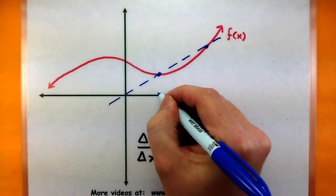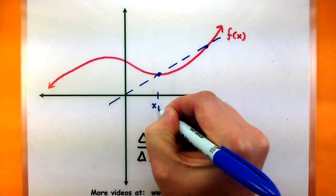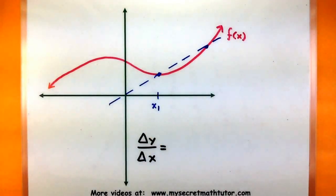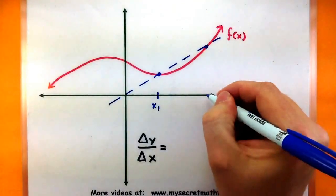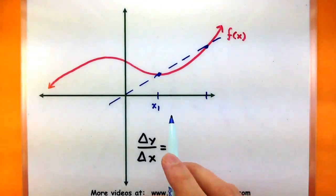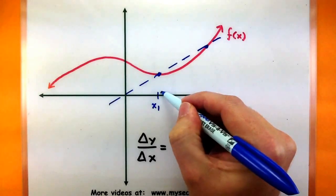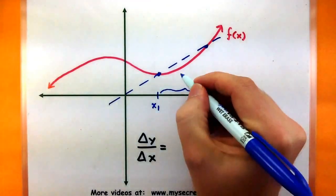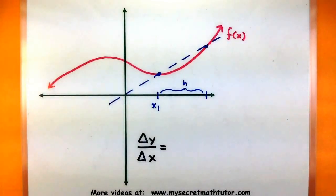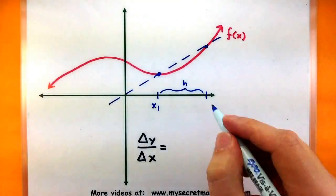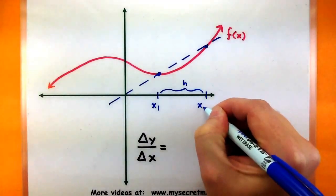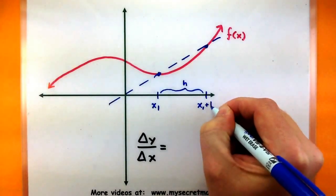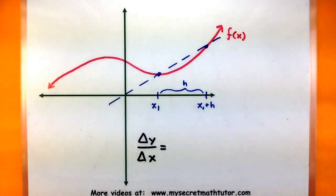So like before, I'm going to call this first point, its x value, x1. And that's the one I'm really interested in. As for my second point, I'm going to define this in a very interesting way. I'm going to define it in terms of a distance from my first point. So this second point is a distance of h away. Now since it is a distance of h away, I can describe its x value as x1 plus this distance h. Now that seems like a really funny way to define the second point, but just follow me for a bit, and you'll see why it is important.